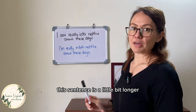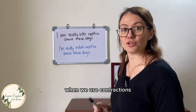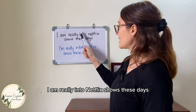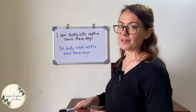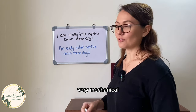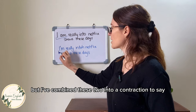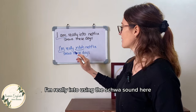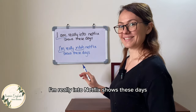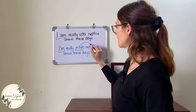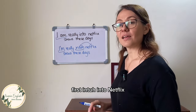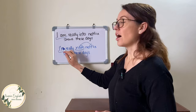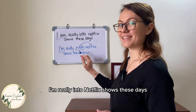This next sentence is a little longer, but I wanted to show you the difference when we use contractions. If I was to say this sentence word for word: 'I am really into Netflix shows these days' — it sounds very robotic and mechanical. But I've combined 'I am' into the contraction 'I'm' and used the schwa sound in 'into': 'I'm really into Netflix shows these days.'